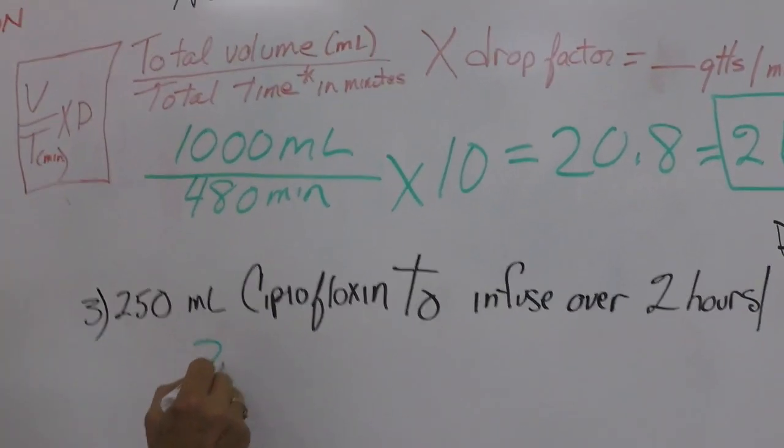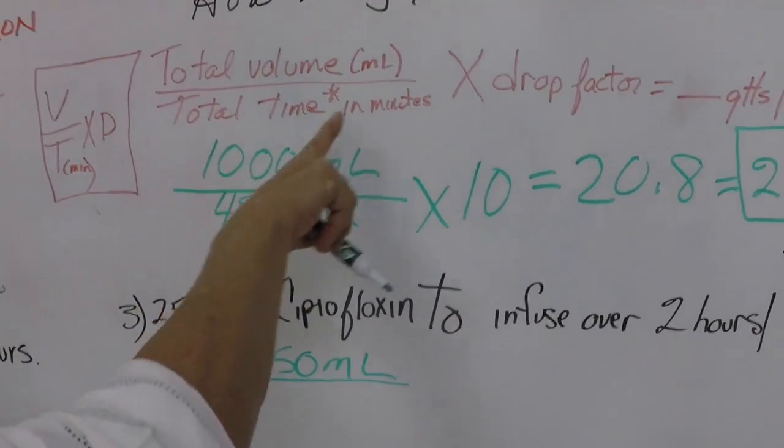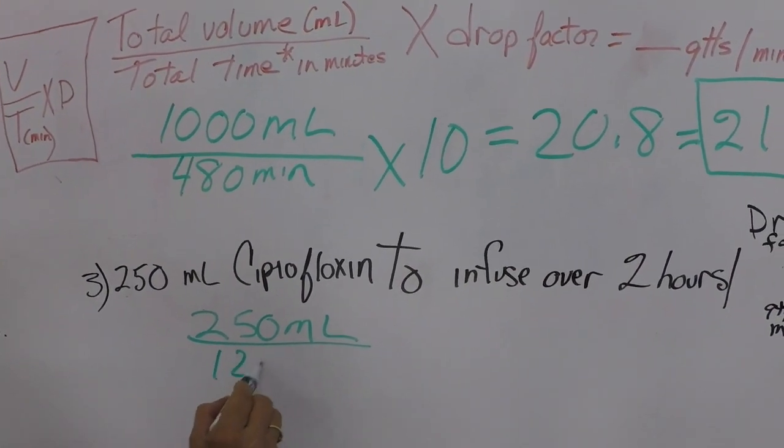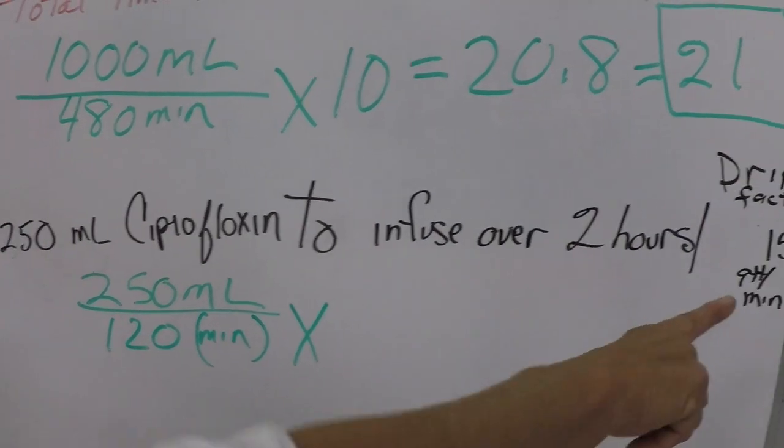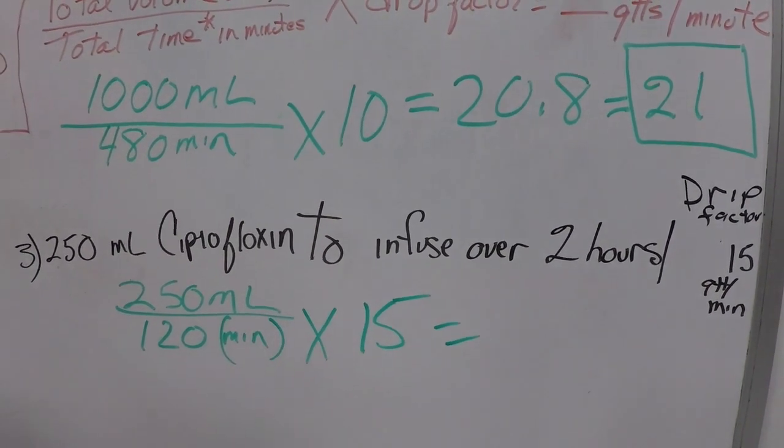So total volume is 250 ml. Our total time in minutes, two hours would be a hundred and twenty minutes times our drip factor which is 15.